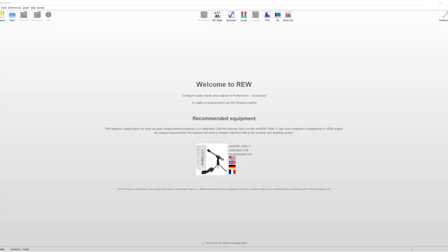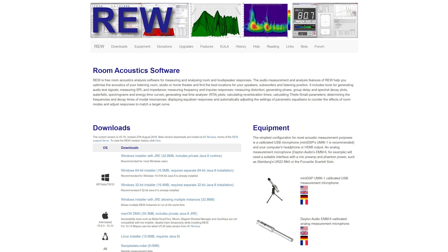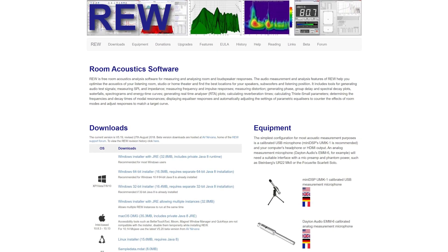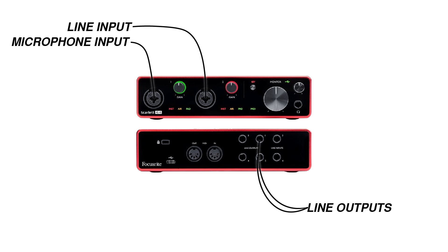There's no need for a special computer. You can use whatever you currently have access to. In fact, there's even a free measurement software called Room EQ Wizard, or REW. I've put a link to the REW download page in the description below this video. You'll need an audio interface with at least one microphone input, one line input, and two line outputs.